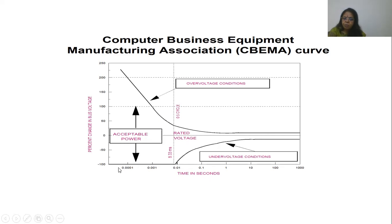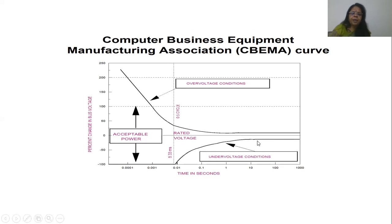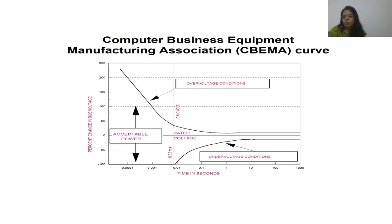The left end of the x-axis shows very short durations; moving right shows longer durations. Two boundaries are drawn — one above nominal and one below nominal. Whatever falls within these two boundaries is acceptable. For example, a 100% deviation lasting only 0.1 millisecond is acceptable — large deviation but very small time. At one second, only a small deviation is acceptable — larger durations require smaller magnitudes.